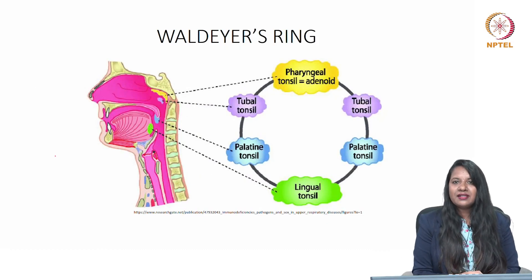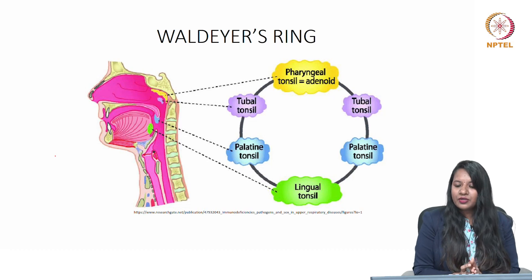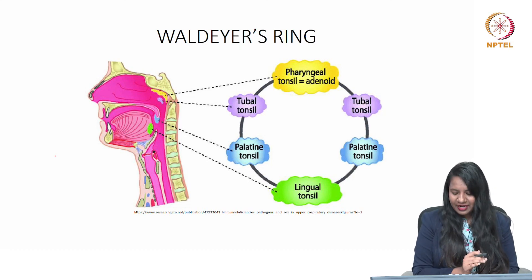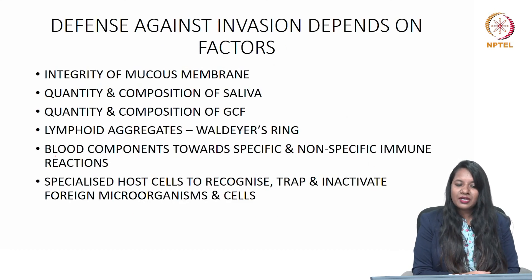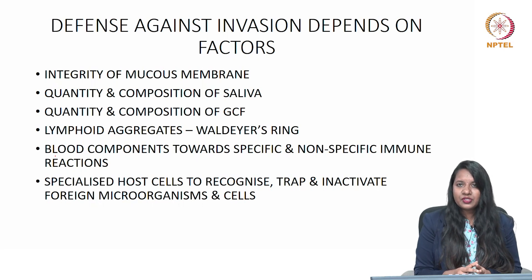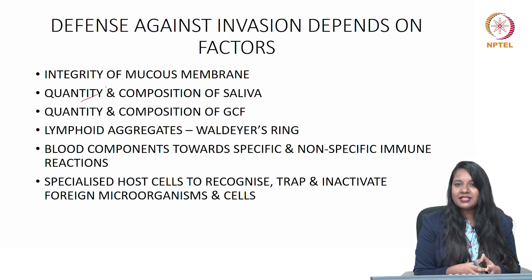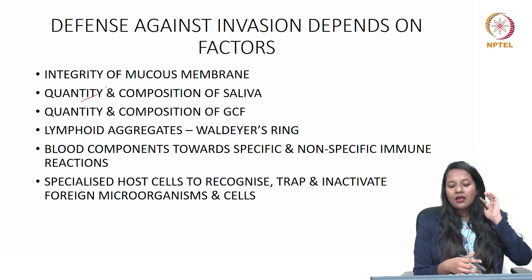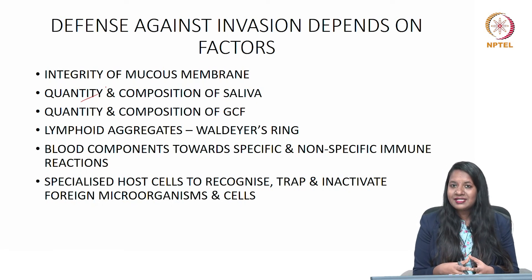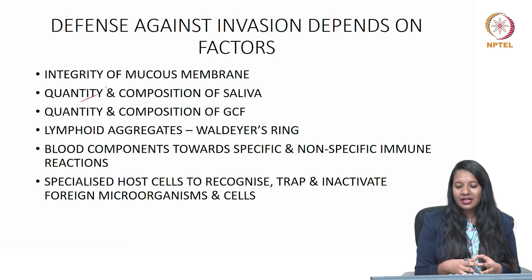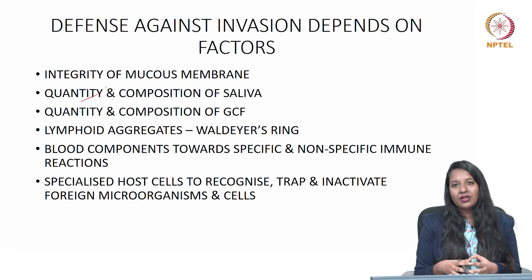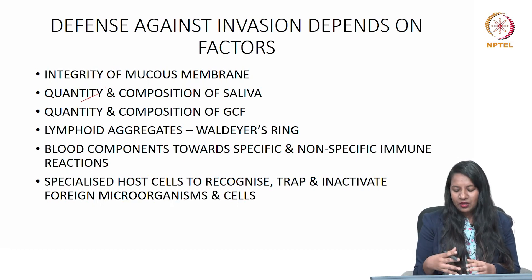Waldeyer's ring is nothing but lymphoid aggregates present in the oropharynx region to prevent the entry of microbes beyond that point. It includes pharyngeal tonsil, tubal tonsil, palatine tonsil, and lingual tonsil. To conclude, though there are various defense mechanisms in the oral cavity, the defense against invasion depends on factors such as integrity of the mucous membrane, quality and composition of saliva, quantity and composition of gingival crevicular fluid, Waldeyer's ring, blood components towards specific and non-specific immune reactions and inflammation, and specialized host cells to recognize, trap, and inactivate foreign microorganisms and cells.